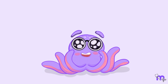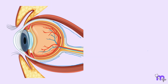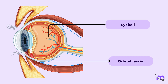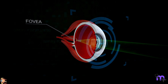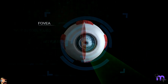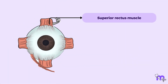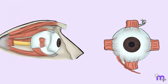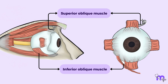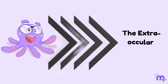Continuing our exploration, we encounter the contents of the orbit. The majority of the space within the orbital cavity is occupied by the eyeballs themselves, accompanied by the orbital fascia. These components work together, providing stability to the eye and supporting movements facilitated by the extraocular muscles. These are six in number: the superior, inferior, medial, and lateral rectus muscles, as well as the superior and inferior oblique muscles. All details about these muscles will be discussed in our session on the Extraocular Muscles.